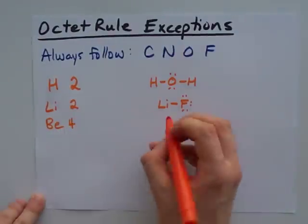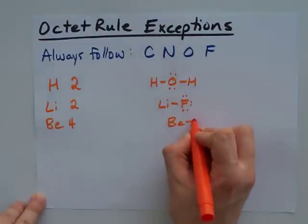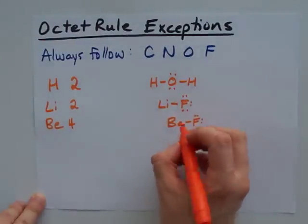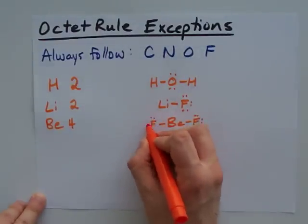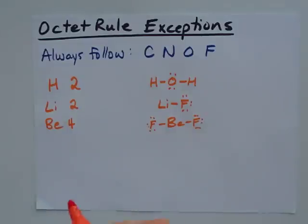Beryllium is happy with four. BeF2 is a common example of that. Be is happy with just the two bonds, and that's it. That makes four electrons.